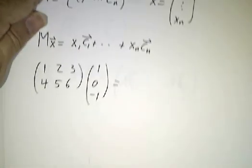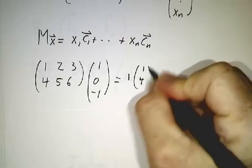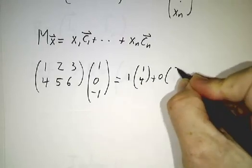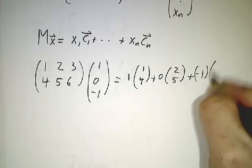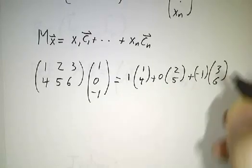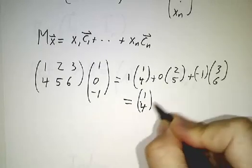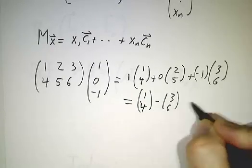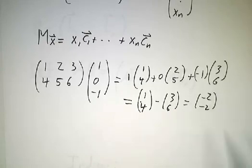So doing the previous calculation from that perspective, we're going to take 1 times (1, 4), plus 0 times (2, 5), plus negative 1 times (3, 6), and that's going to give us (1, 4) minus (3, 6), and that's negative 2, negative 2, exactly as before.